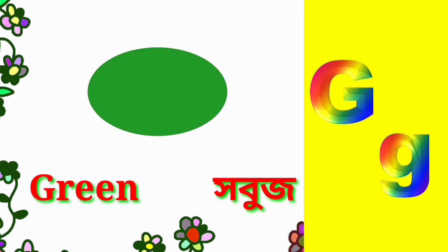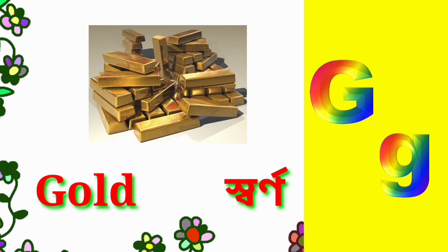D for green, green ortho shabud. D for gold, gold ortho shano.